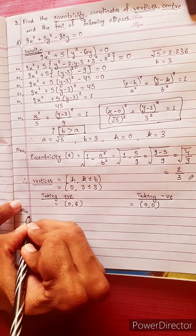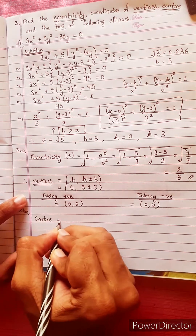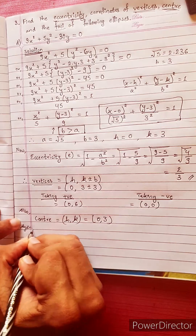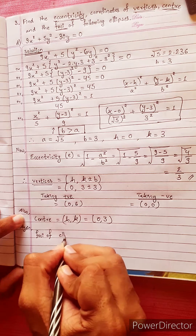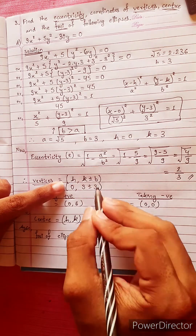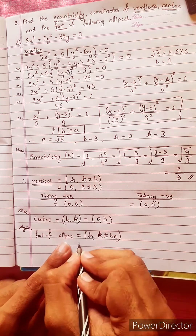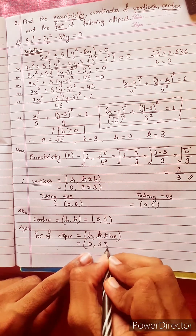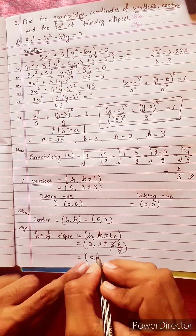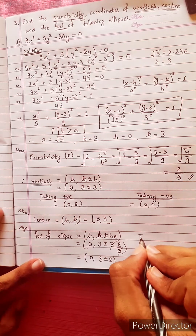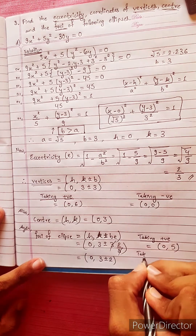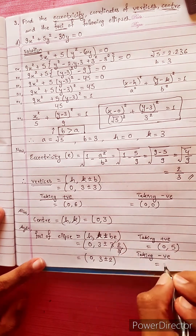Now for the foci: the formula for foci of an ellipse is (h, k plus minus c), where c equals b times e. With center (0, 3), b equals 3, and e equals 2 by 3, we get 3 times 2/3 equals 2. Taking positive: (0, 3 plus 2) equals (0, 5). Taking negative: (0, 3 minus 2) equals (0, 1). So the foci are (0, 5) and (0, 1).